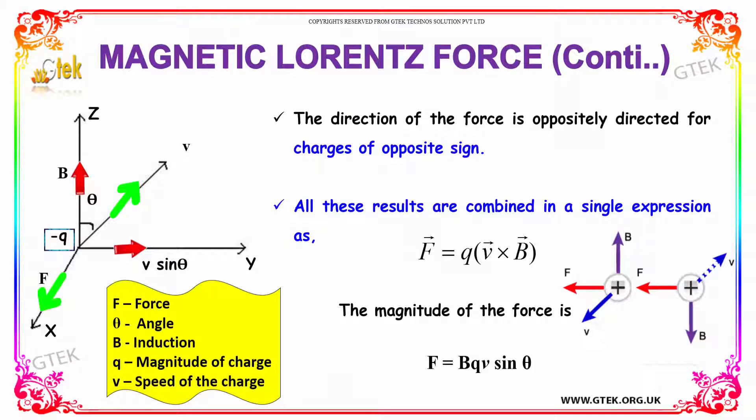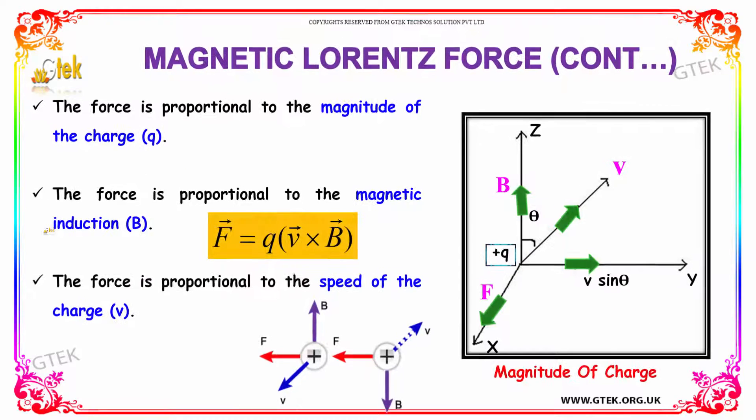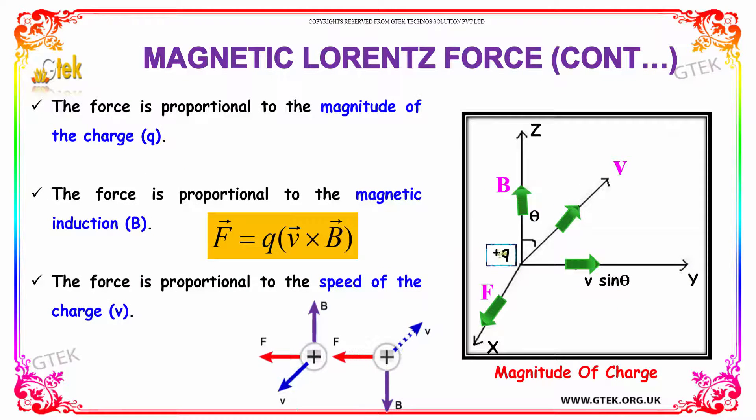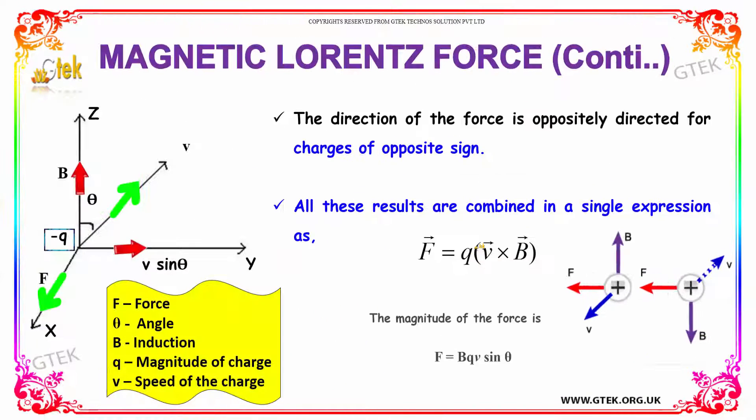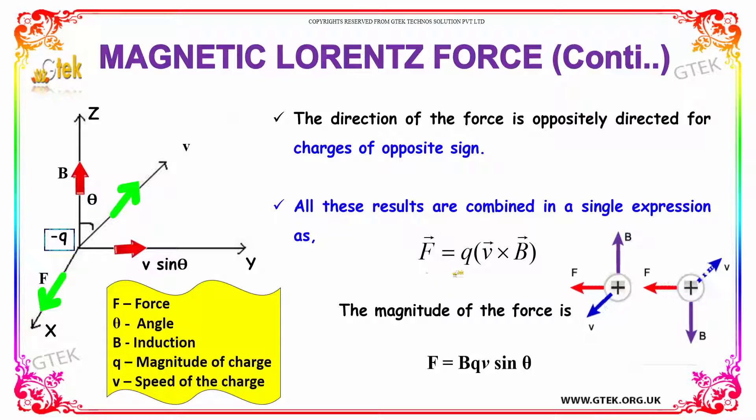The direction of the force is oppositely directed for charges of opposite sign. You can see minus Q here and plus Q over here. All these results are combined in a single expression: F vector equals Q into V vector cross B vector. The magnitude of the force is given as F equals BQV sin theta.